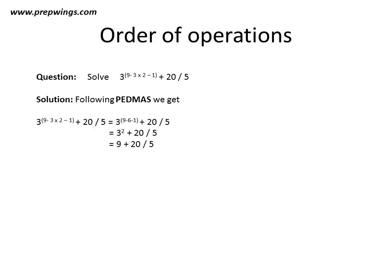Then, we will do the exponent operation. 3^2 equals 9. So, what we get is 9 + 20 ÷ 5. Then, divide operation: 20 ÷ 5 gives us 4. So, what we get is 9 + 4 which equals 13.